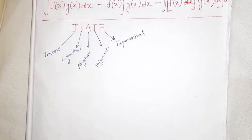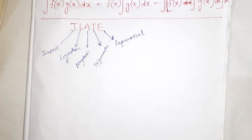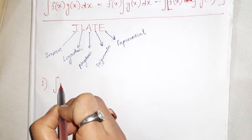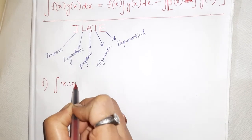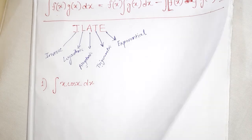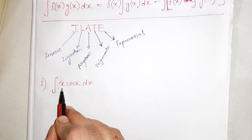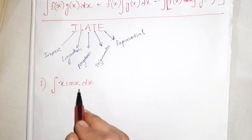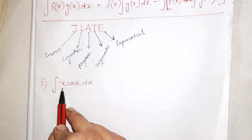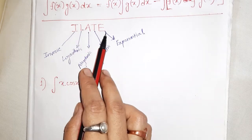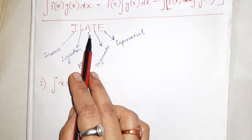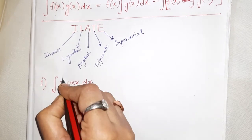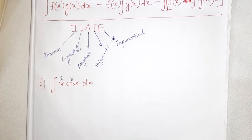The very first problem: find the integration of x cos x dx. Here we have two functions — x is algebraic, cos x is trigonometric. According to ILATE, we choose algebraic x as the first function and cos x (trigonometric) as the second function.